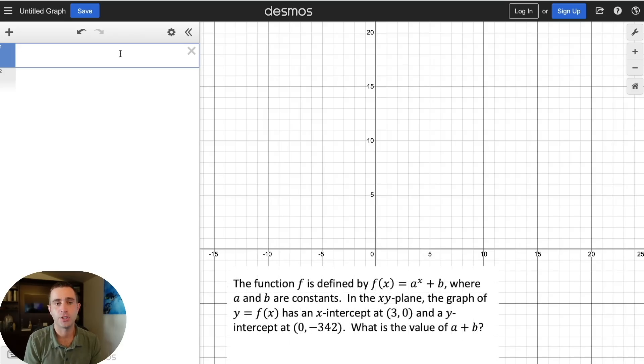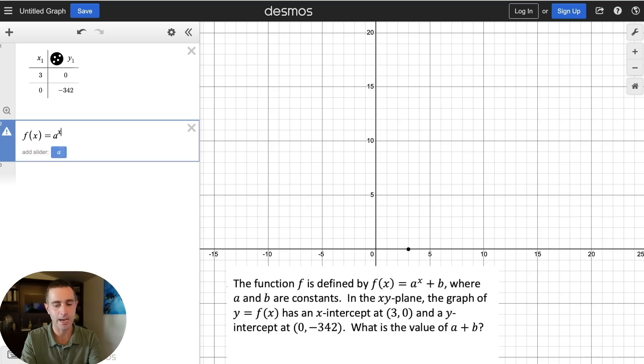Now, one of the next things you're definitely going to see on your digital SAT are questions that can be done in Desmos very easily if you know some really important tricks. And most of these revolve around understanding how to use the table and the regression tool. So here we see the function f is defined by f of x equals a to the x plus b, where a and b are constants. In the xy-plane, the graph of y equals f of x has an x-intercept at 3, 0 and a y-intercept at 0, negative 342. What is the value of a plus b? Well, first thing we're just going to do is simply enter into the table those two points. We have the point 3, 0 and we have the point 0, negative 342.